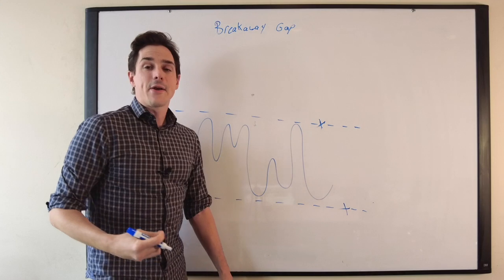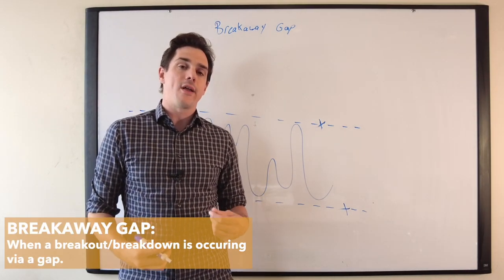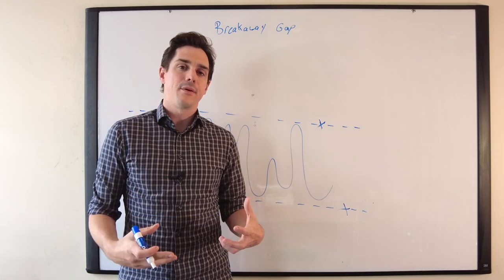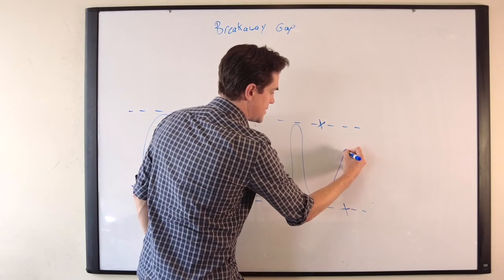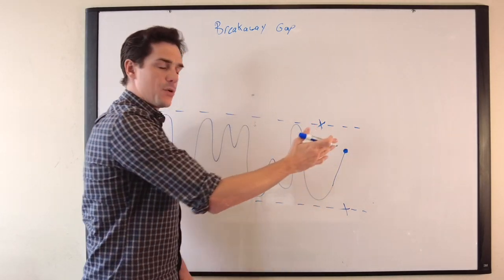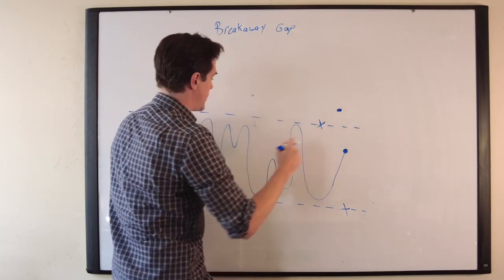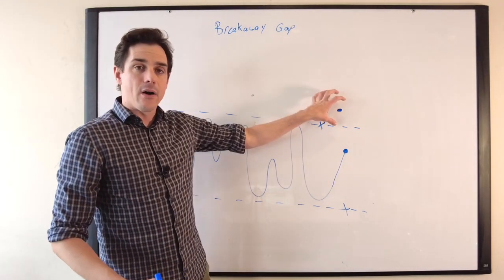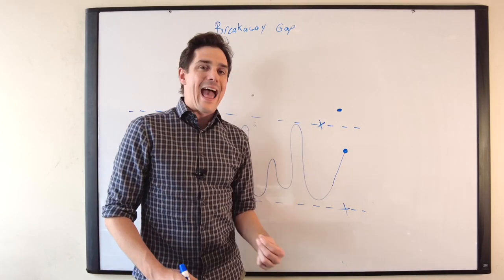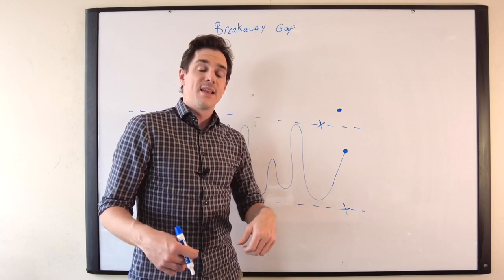A breakaway gap is basically when a breakout or a breakdown is occurring via a gap. In other words, maybe our market closes right here today, still within the range, and today we are opening up above this resistance level. We are having our breakout occur via a gap - that is a breakaway gap.